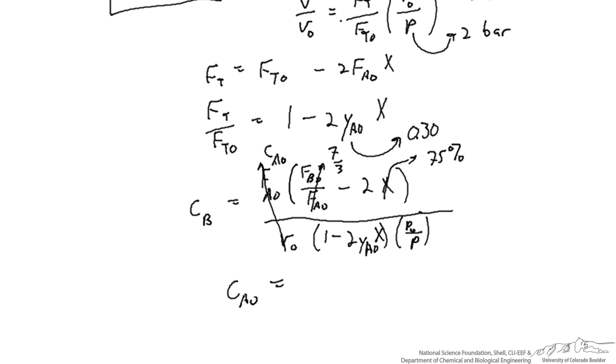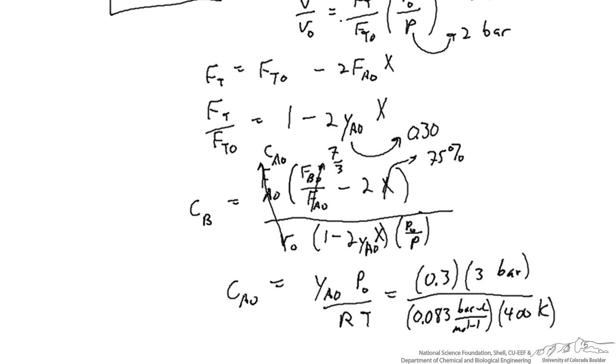CA0 we can express in terms of the mole fraction of A initially times the initial pressure over RT. Temperature in this case is equal to 400 Kelvin, and then in convenient units for this problem statement, the value of R is approximately 0.083 in units of bar, liter, moles, and kelvin, so this will give us the concentration in units of moles per liter.